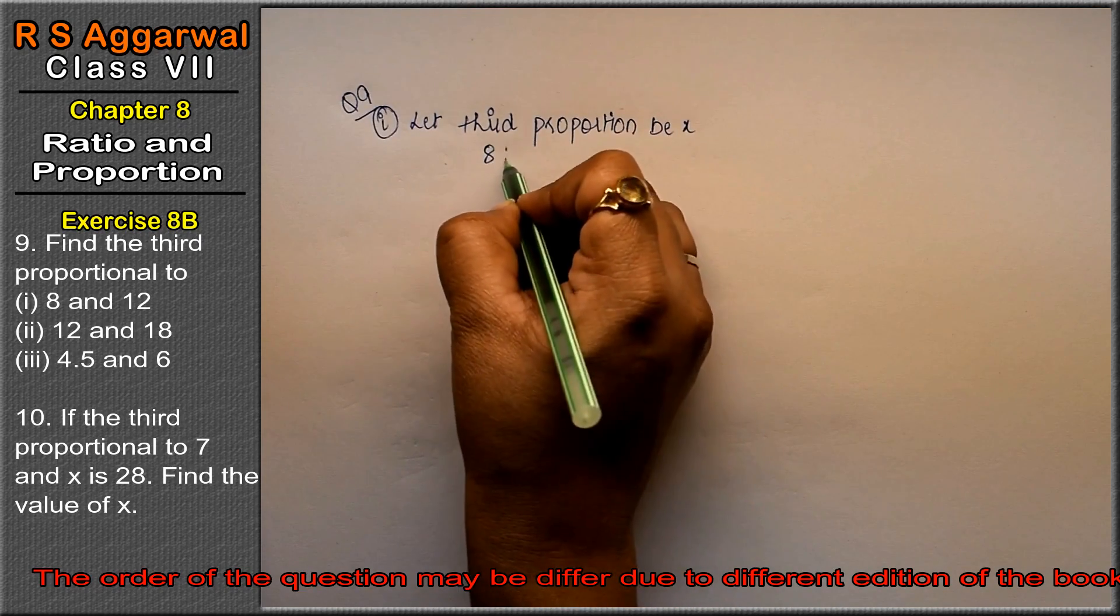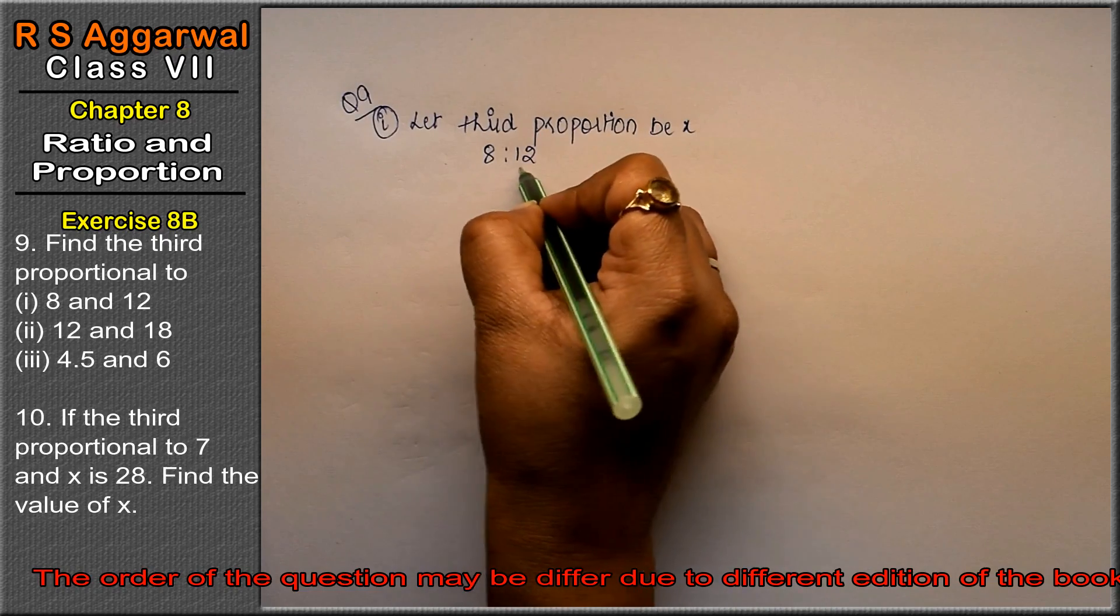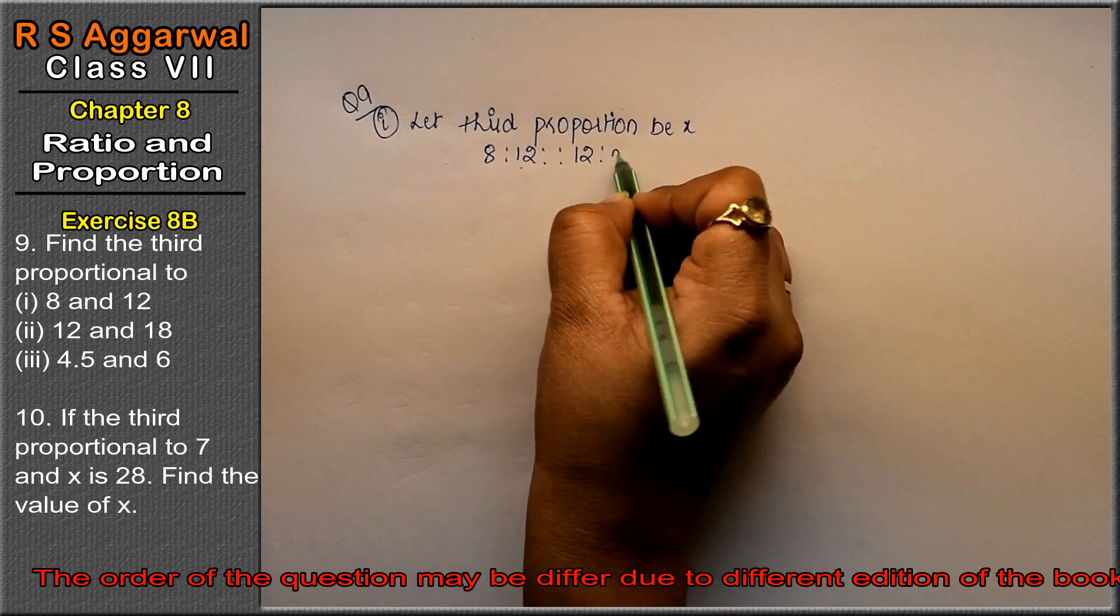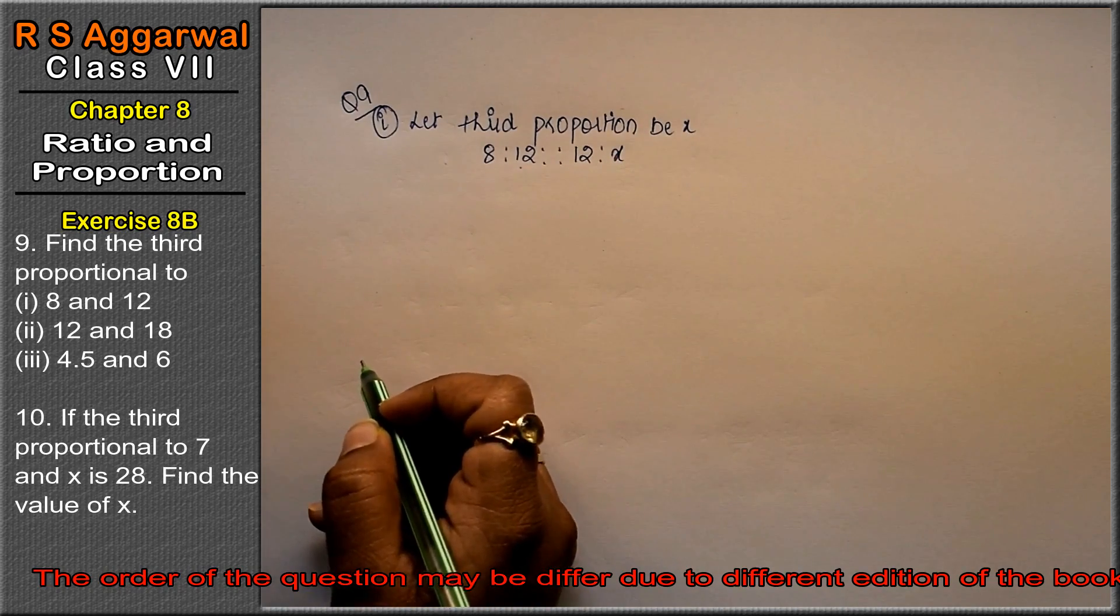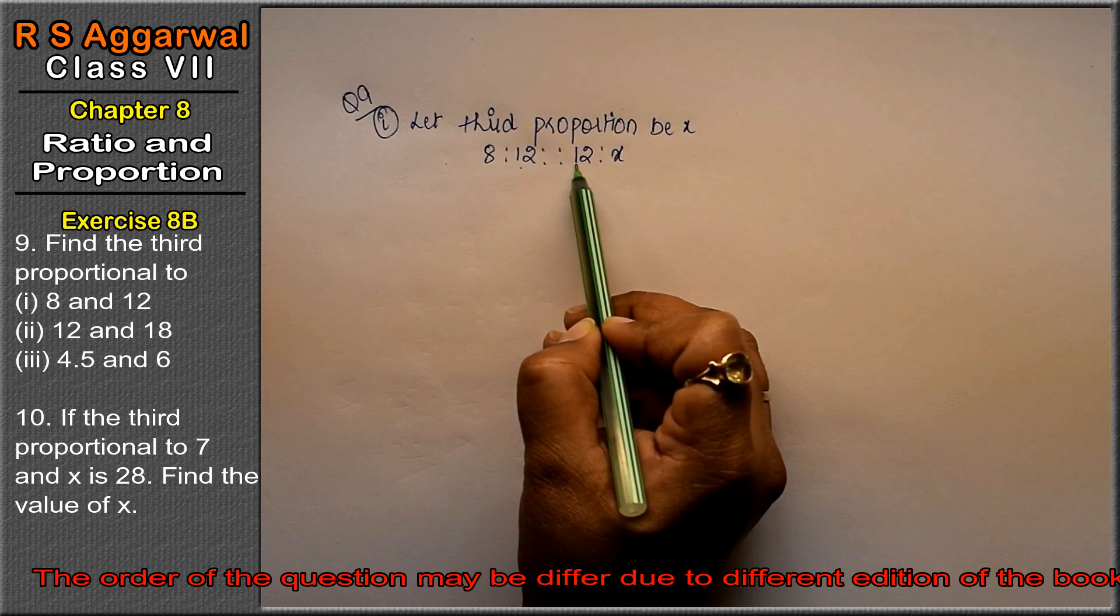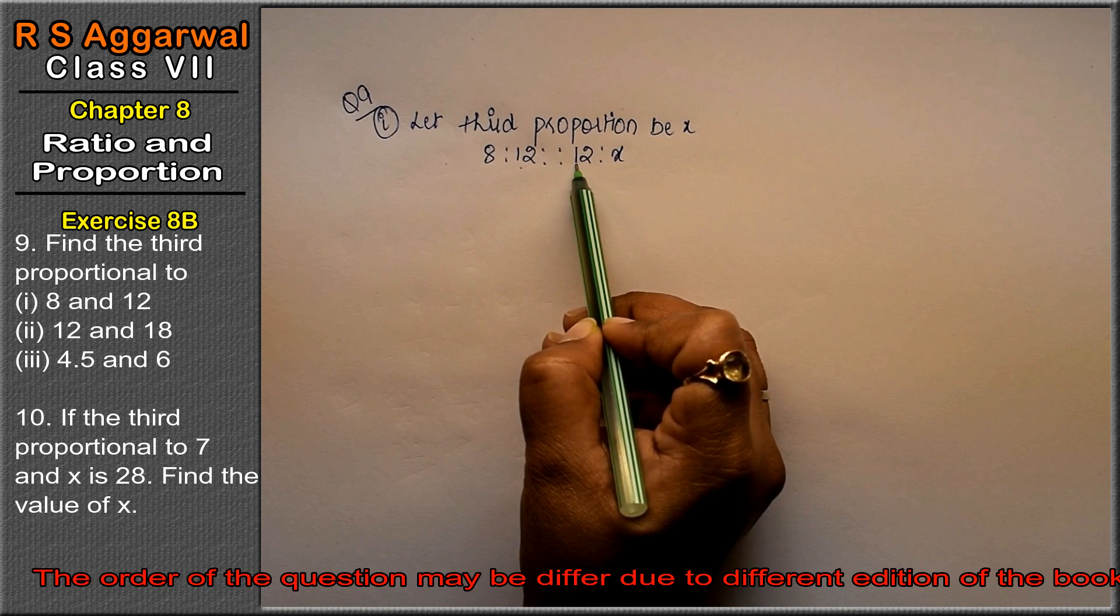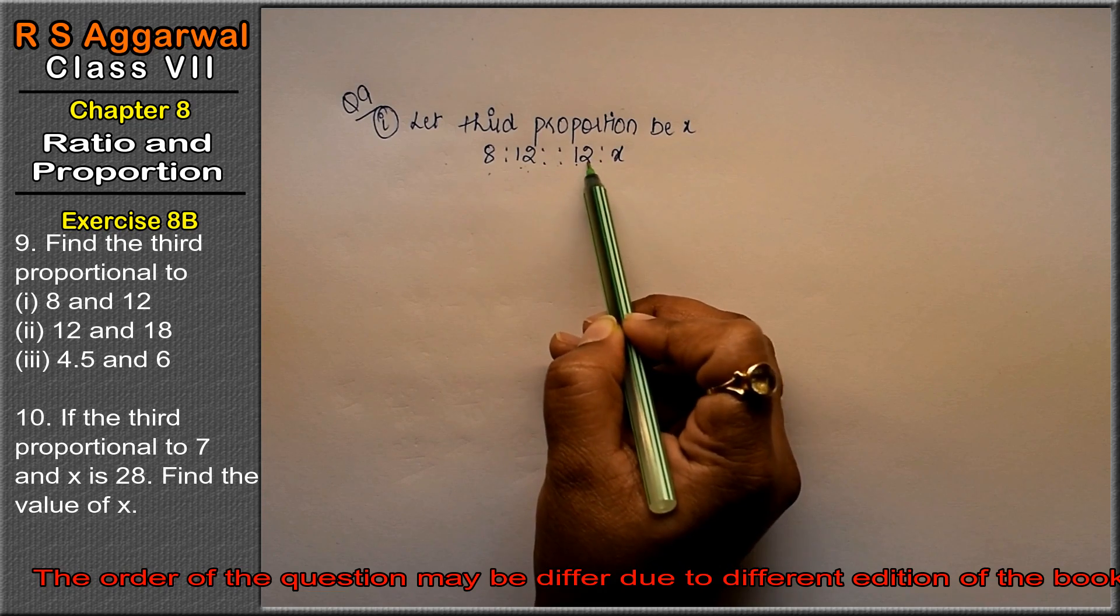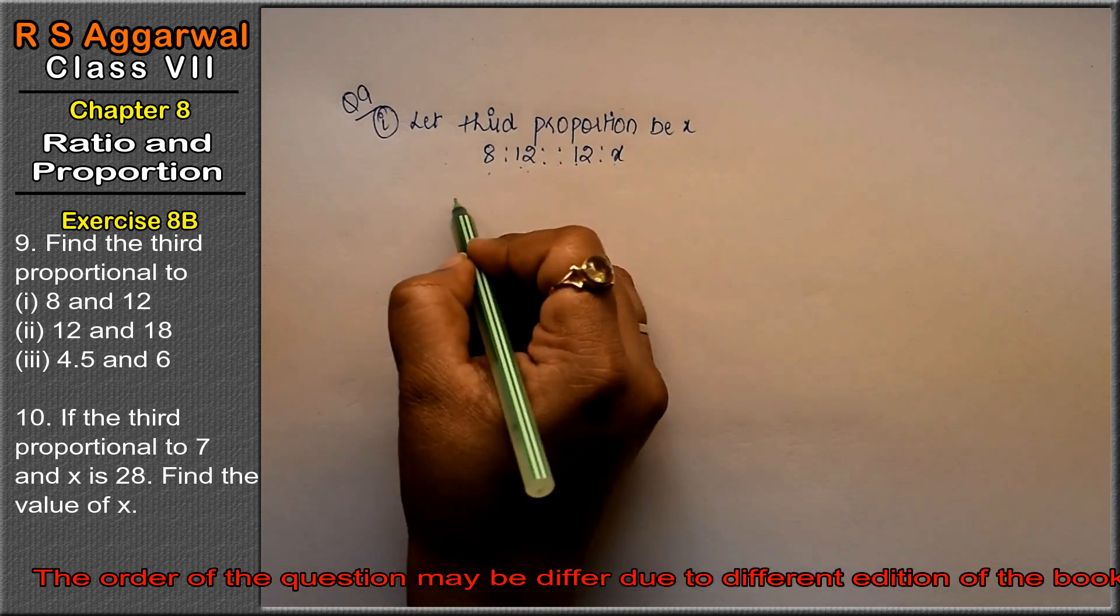We think that 8 is to 12. The second was 12, so 12 proportionate - 12 twice and we take x. Third proportion. Now see, we have to take the second proportion. So this is why it was second proportion. What did it do? First upon second equals to second upon third. We can write it.